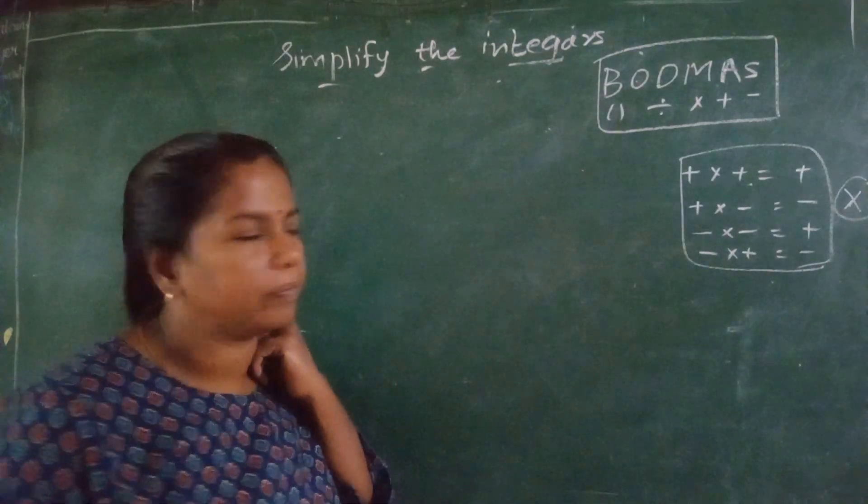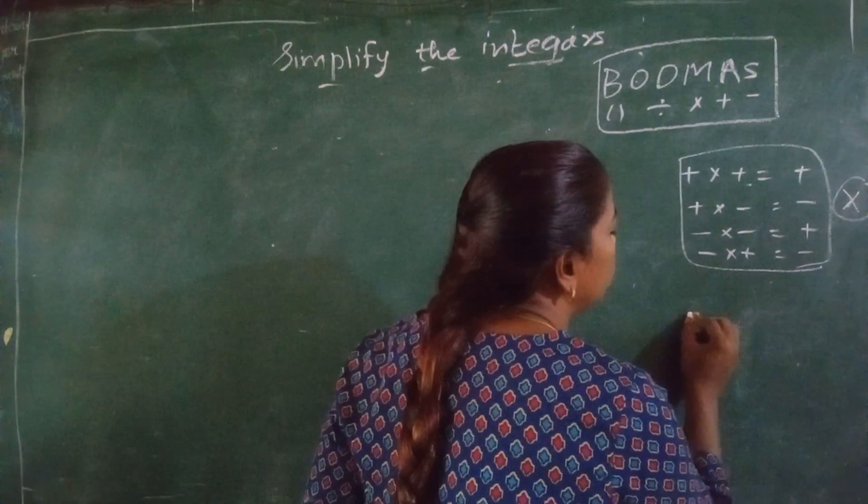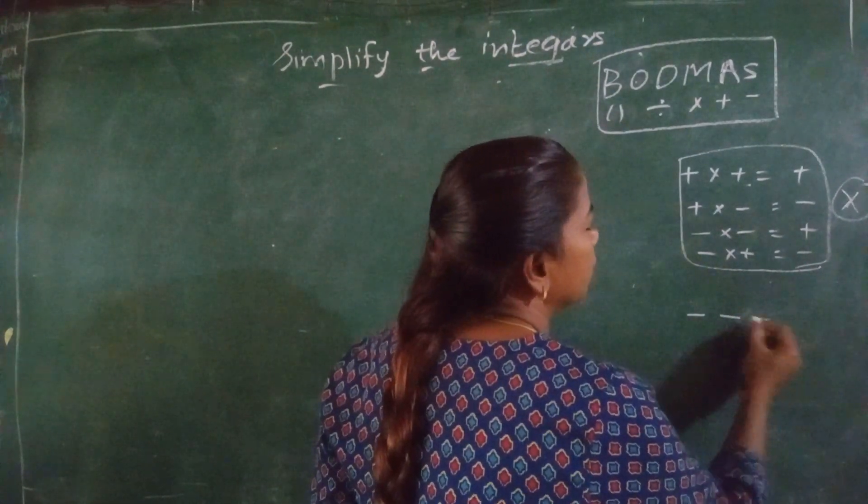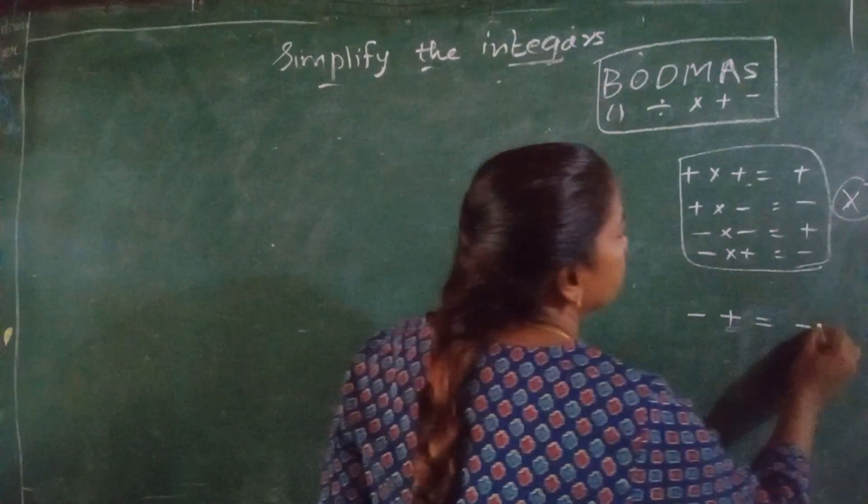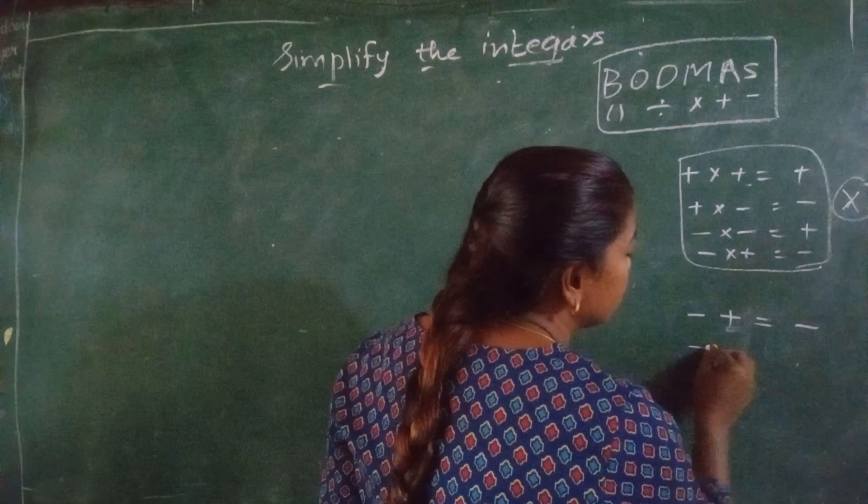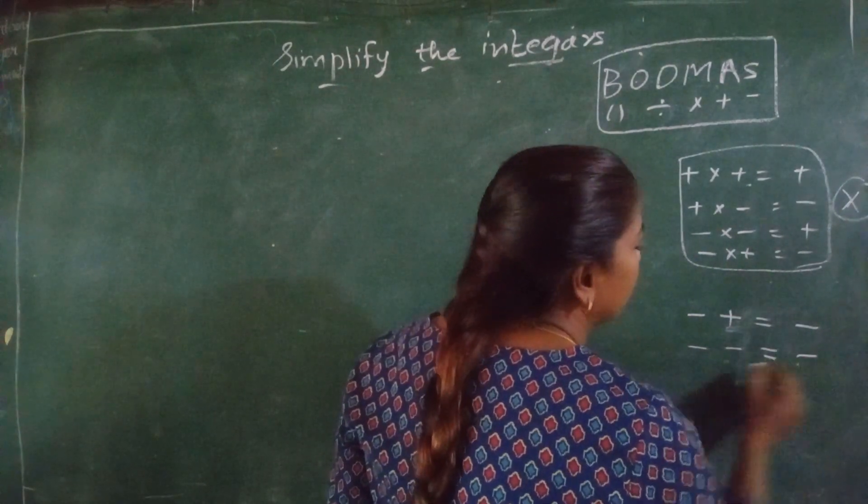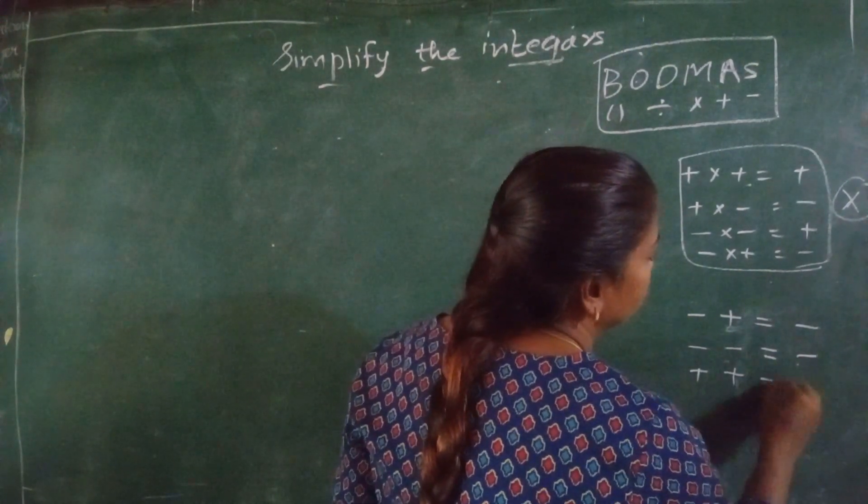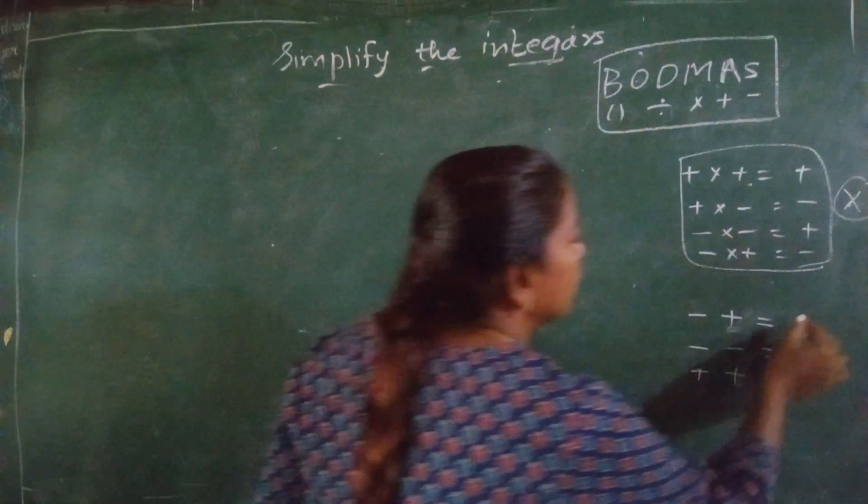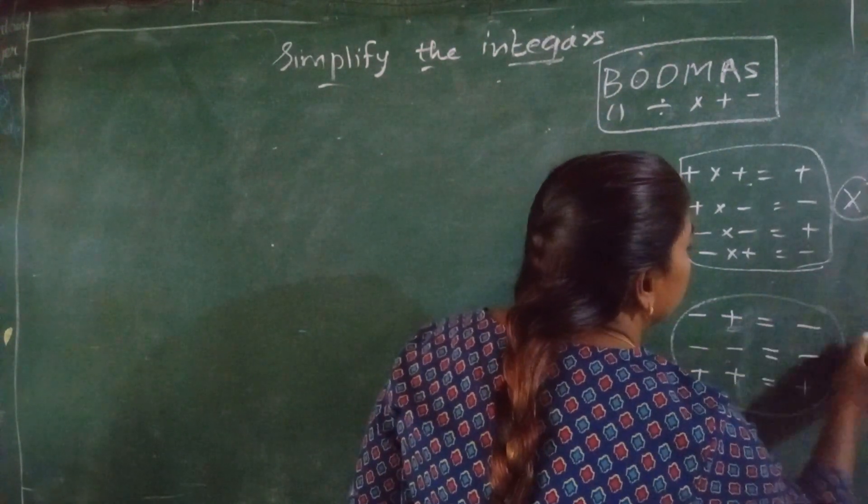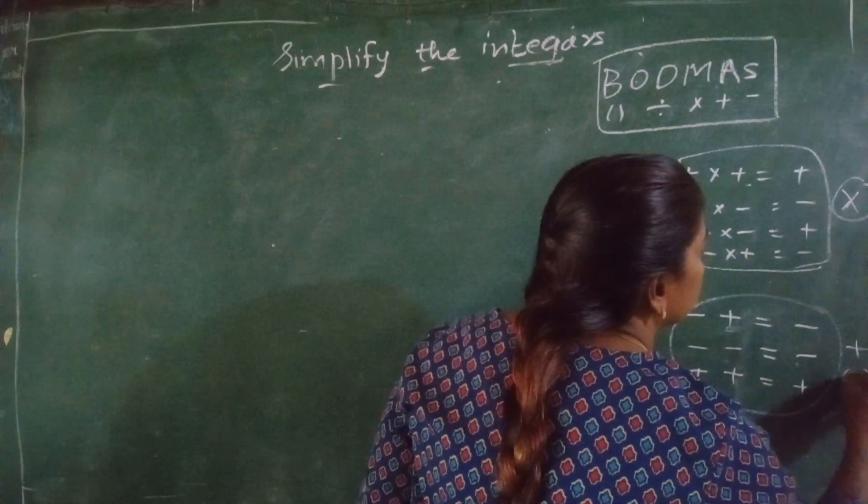Another is, if two different signs come, put the greater number sign and subtract it. If two same signs come, put the same sign and add it. This rule is applicable for all addition and subtraction.